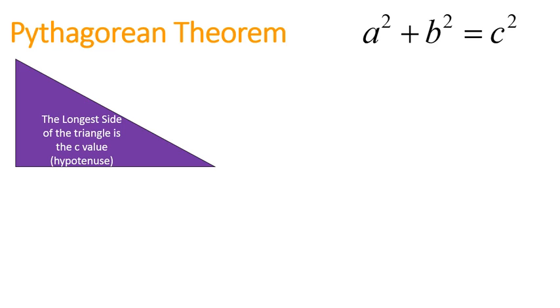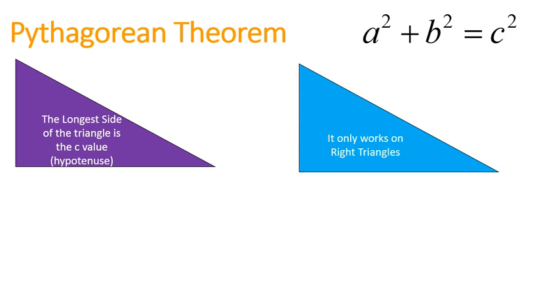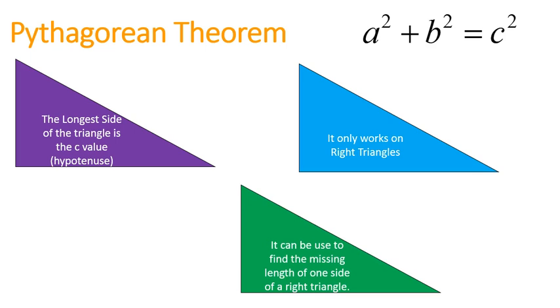a plus b, the smaller sides added together, equals c squared. It only works on right-angled triangles, and it can be used to find the missing length of one side of a right-angled triangle, and that's what we're going to be doing today.